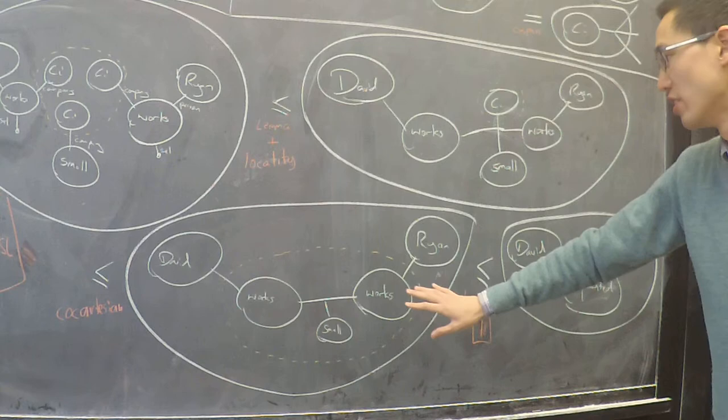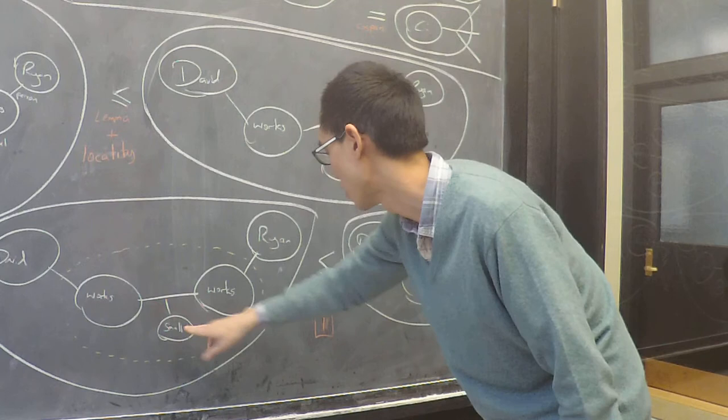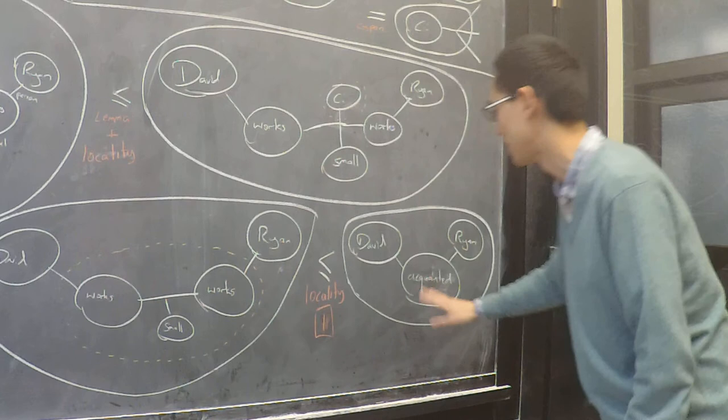And now using again locality, if zooming in on this diagram that says that two people work at some small company, we have this fact 1 which tells us that when two people work at a small company they are acquainted. So replacing this with acquainted would prove that David and Ryan are acquainted. And this completes the proof of our goal theorem.